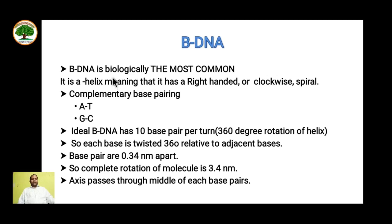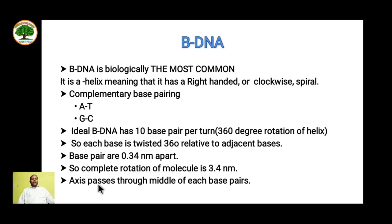B-DNA is the biologically most common form present in all cells. It is a right-handed, clockwise-rotating helix. Complementary base pairing — A-T and G-C — is universal. It has 10 base pairs per turn for a 360-degree rotation, with each base twisted 36 degrees relative to adjacent bases. Base pairs are approximately 0.34 nanometers apart, so the complete rotation spans about 3.4 nanometers. The helix axis passes through the middle of each base pair.